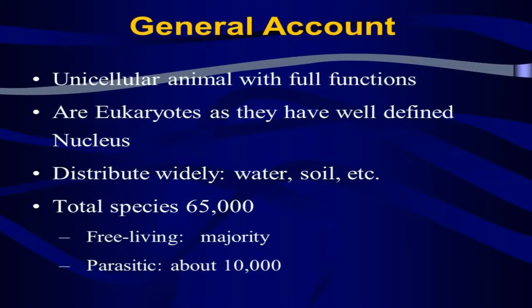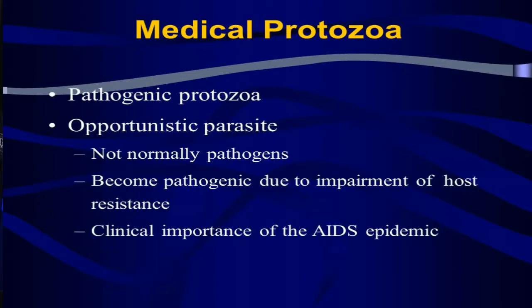Some general characters: unicellular animals with full functions, they are eukaryotes with a well-defined nucleus, distributed widely in water and soil. There are approximately 65,000 total species; the majority are free-living, some are parasites. Parasitic protozoa cause problems like amoebic dysentery. Some are pathogenic protozoa — opportunistic parasites that become pathogenic due to impairment of host resistance, with clinical importance in the AIDS epidemic.